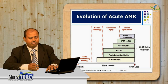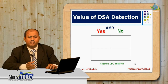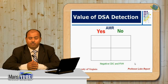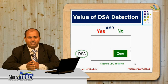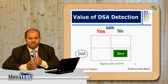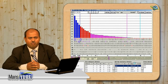To illustrate the critical role of DSA in AMR: Professor Lebo from the University of Virginia showed that if you search for DSA and find none in the recipient serum, the likelihood of antibody-mediated rejection is zero. This reflects the importance of DSA presence for diagnosis of antibody-mediated rejection.